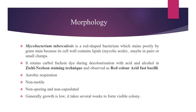Morphology. Mycobacterium tuberculosis is a rod-shaped bacteria which stains poorly by Gram stain because its cell wall contains mycolic acid. The carbolfuchsin dye during decolorization with acid and alcohol in Ziehl-Neelsen staining technique is observed as red color acid-fast bacilli under microscope. The respiration is aerobic. It is non-motile, non-sporing, and non-capsulated bacteria. Generally, the growth is slow and it takes several weeks to form visible colonies in the media.